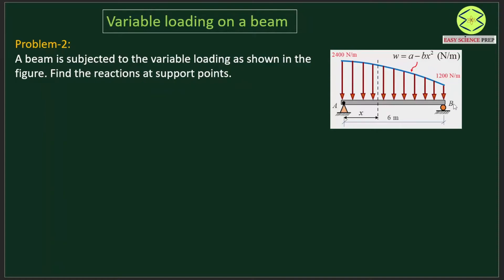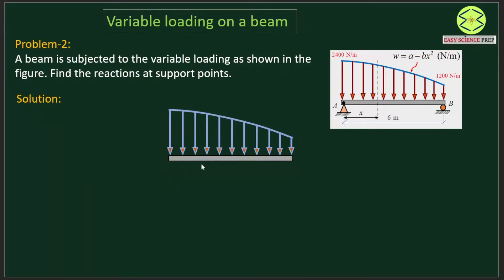Since point A is a hinge-support and point B is a roller-support and there is no inclined load acting on the beam, there shall be two support reactions acting at point A and point B respectively. Let me draw the free body diagram of the beam. The beam has a variable load given by W equals A minus Bx squared, with the span of the beam being 6 meters. The x is the distance from point A; at point A x equals 0, and at point B x equals 6 meters.